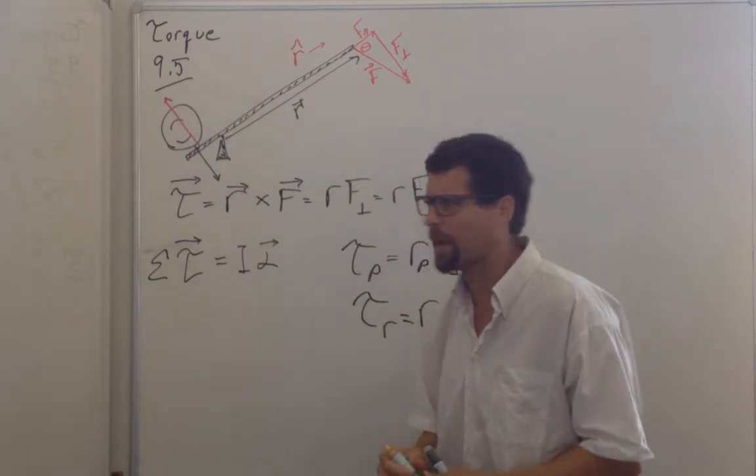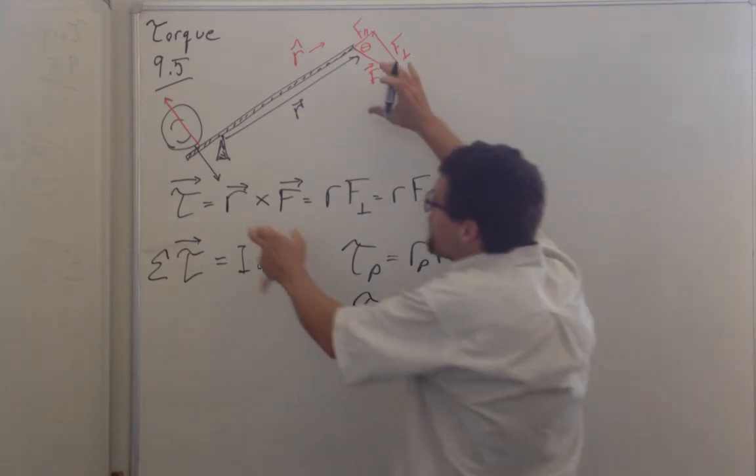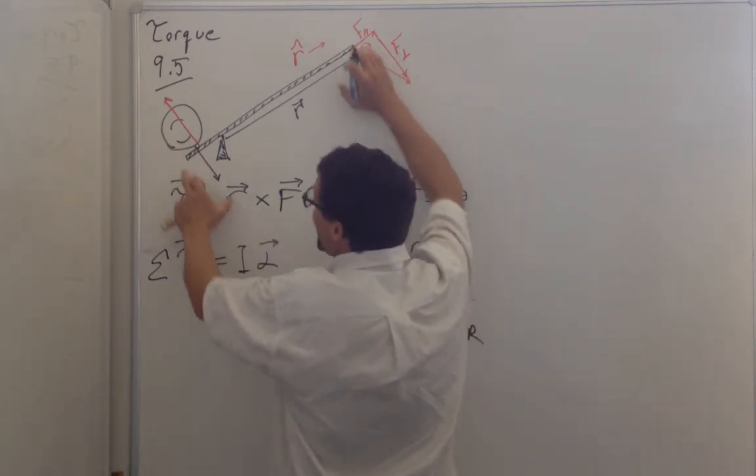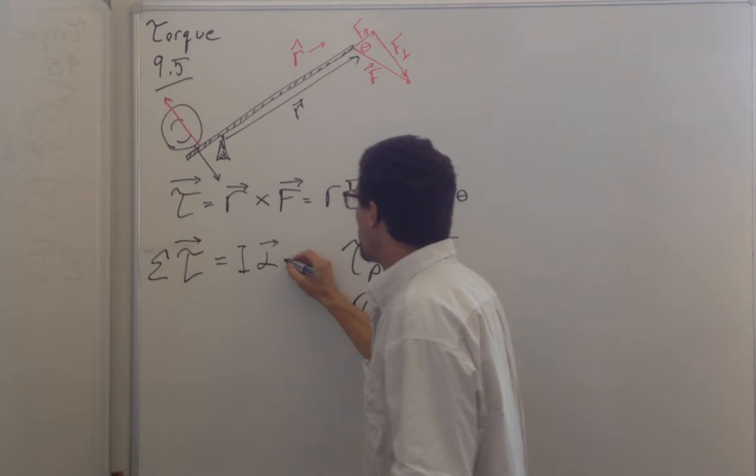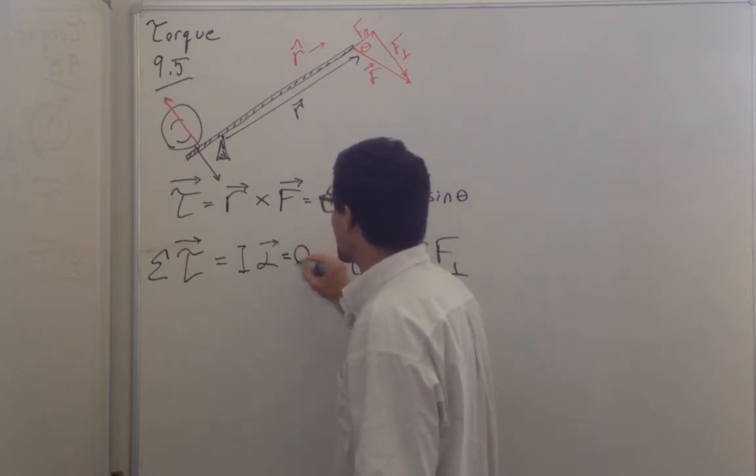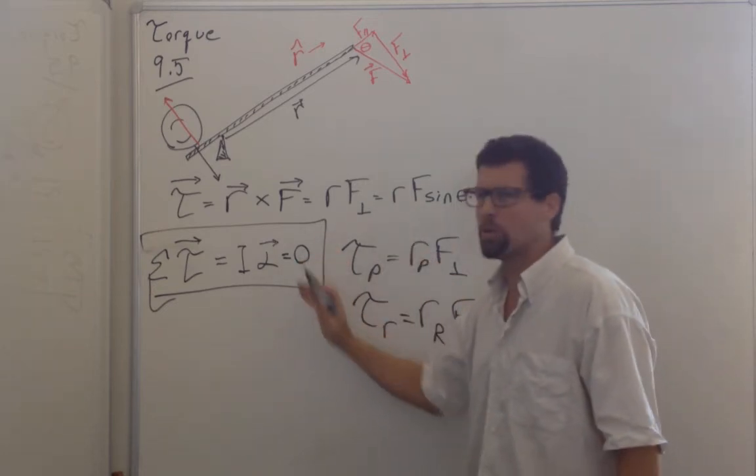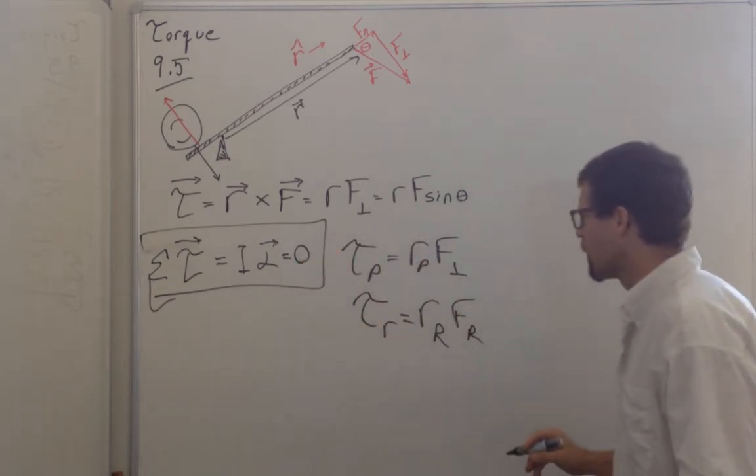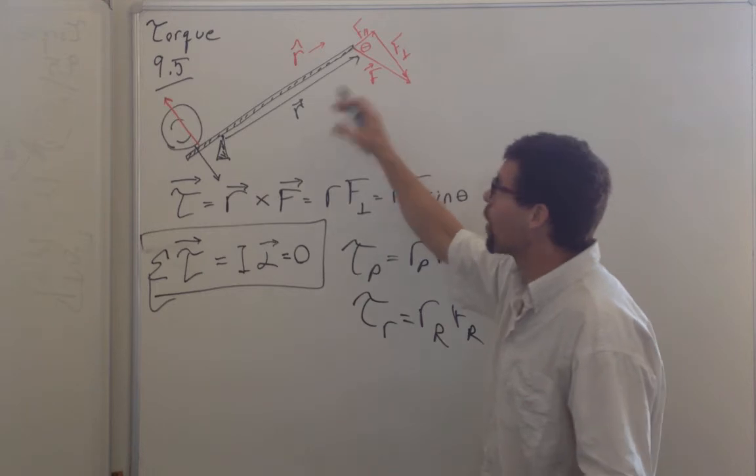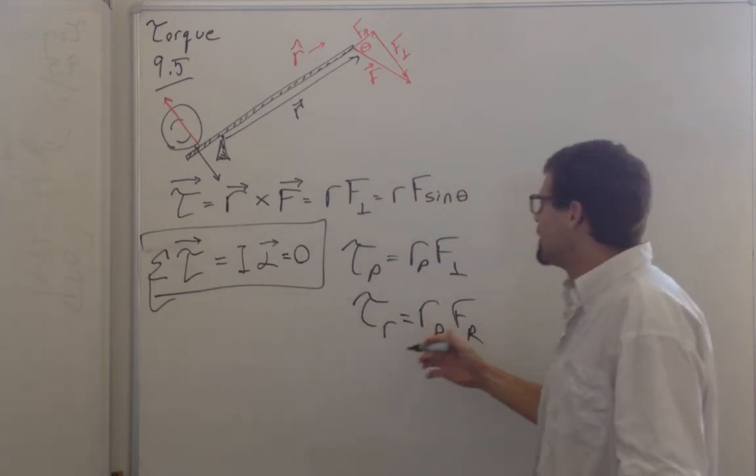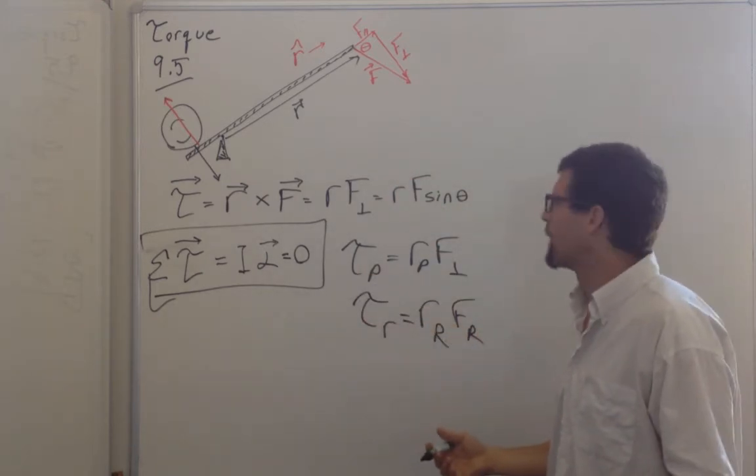And so what we see is if there's no angular acceleration, we know that the vector sum of the torques is zero, which is why it's our first statics problem, because there's no motion. It's static. So we know that these two torques, unless there's more, they have to equal zero. They have to be equal and opposite.